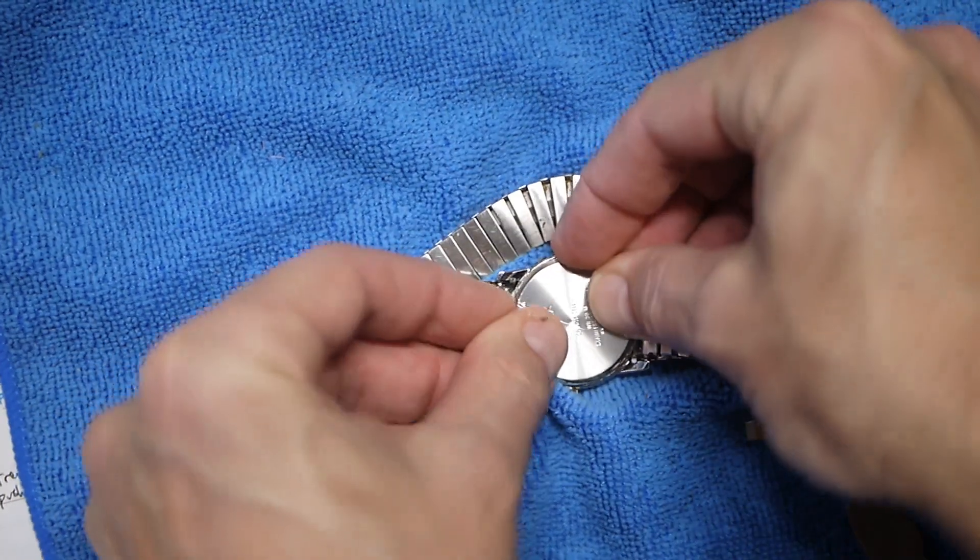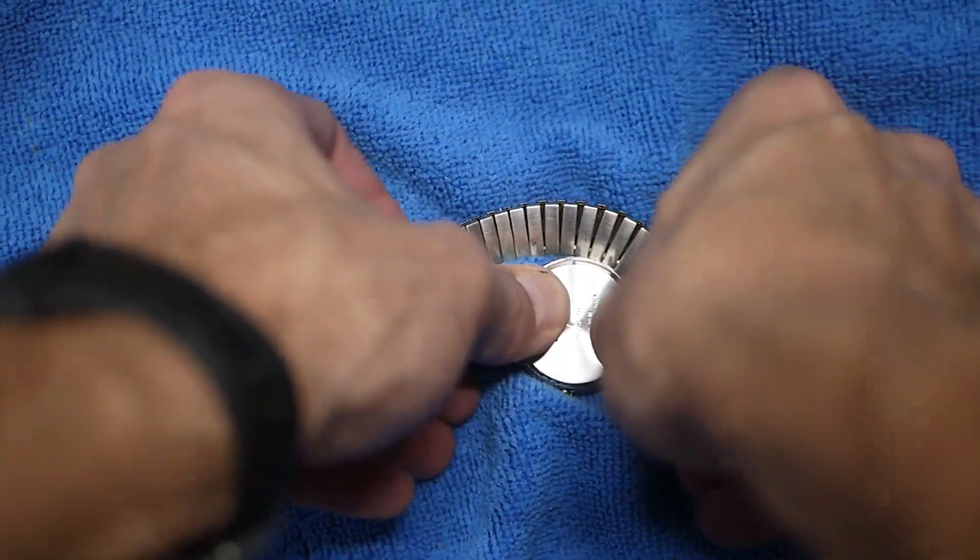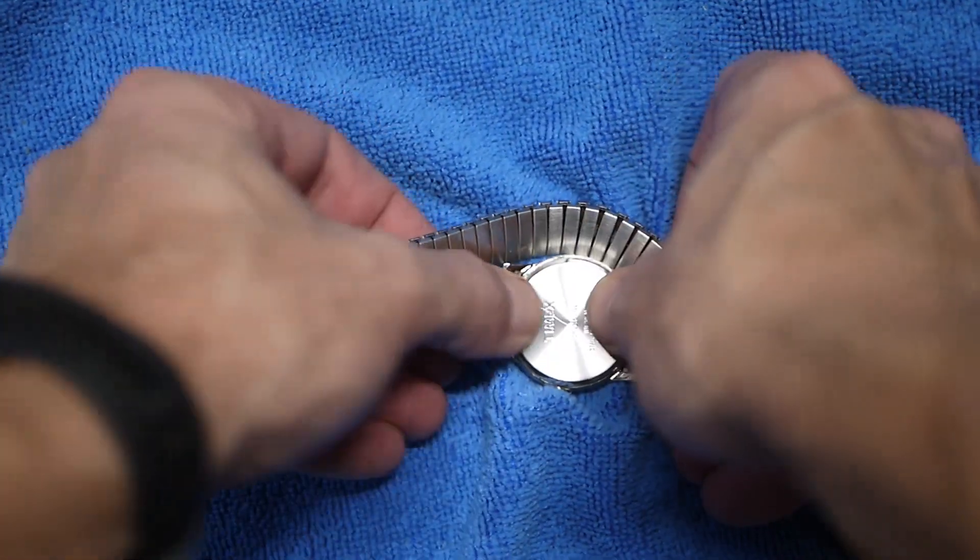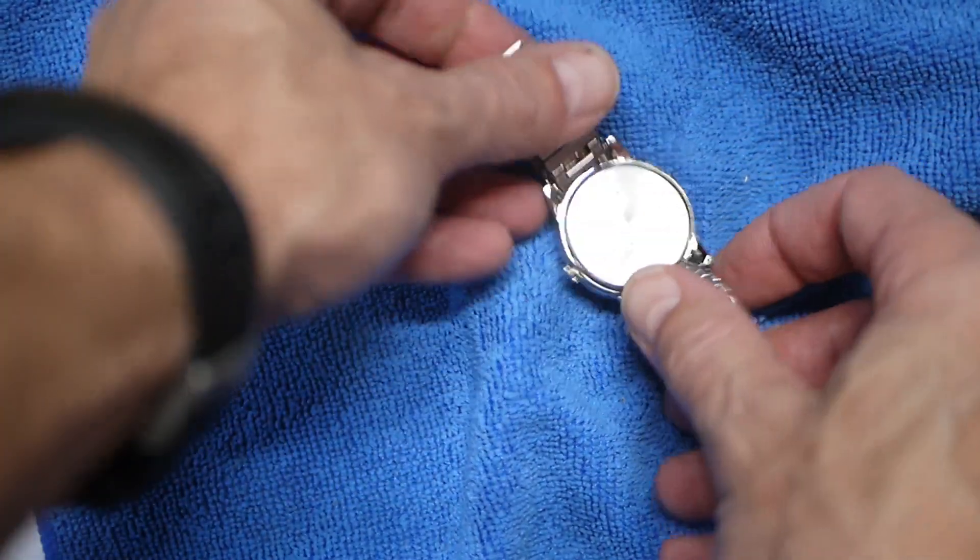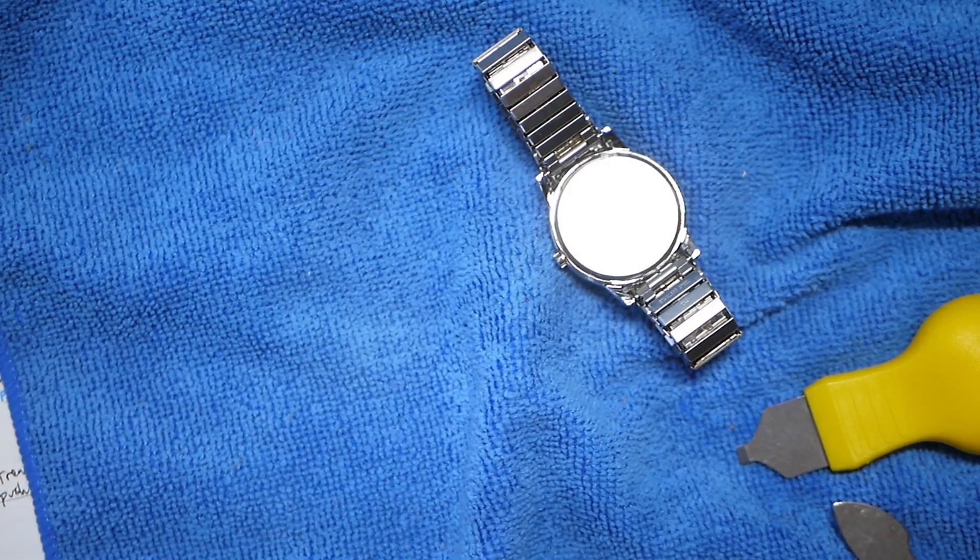So what we're going to do here is just try to get this back on by hand. There we go. You can hear it snap. That's when you know you got it. And then just give it a good look around the edge and make sure that it's good to go.